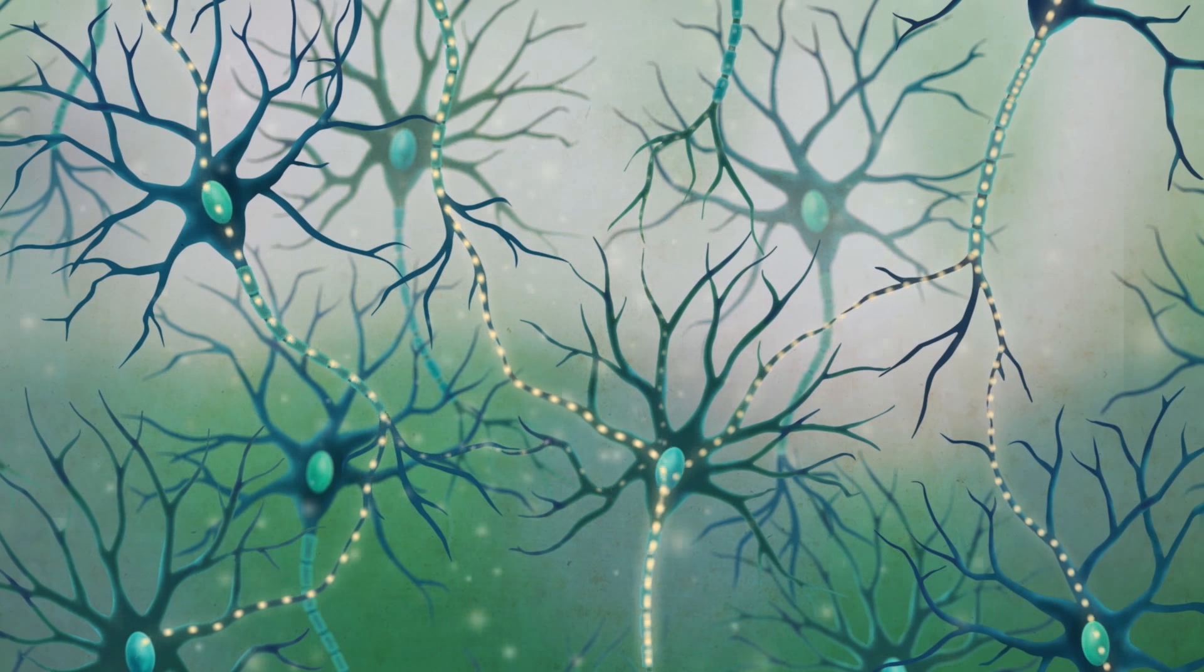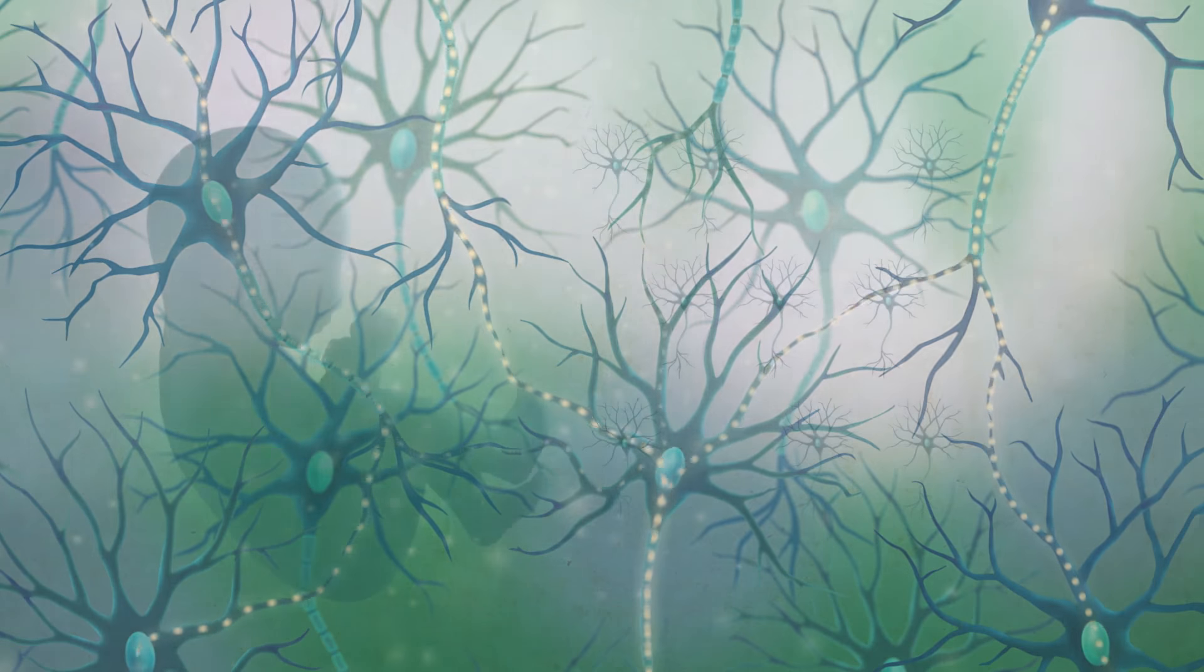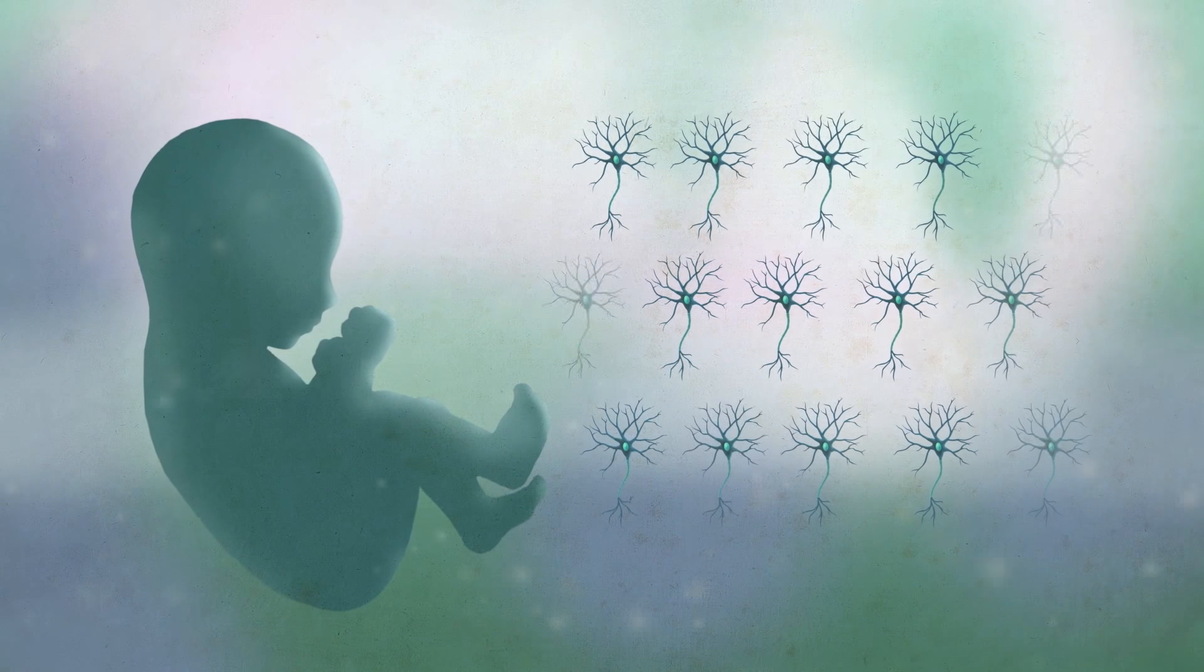Still, a healthy brain needs neurons to die off too. During development, the human brain grows excess neurons.